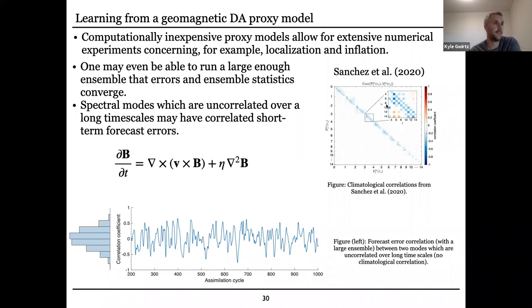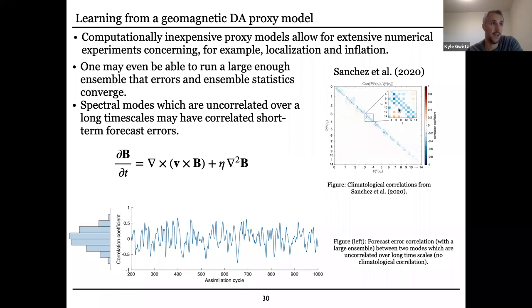What I'm getting at is: if you look back at the dynamo model correlations, one of the issues we may be having is that you look at the climatological correlations and you want to zero out some covariances in your forecast ensemble because they don't seem to be correlated climatologically — but that may not actually be what you want to do. It may be that the short-term forecasts used in the assimilation system should in fact be correlated.